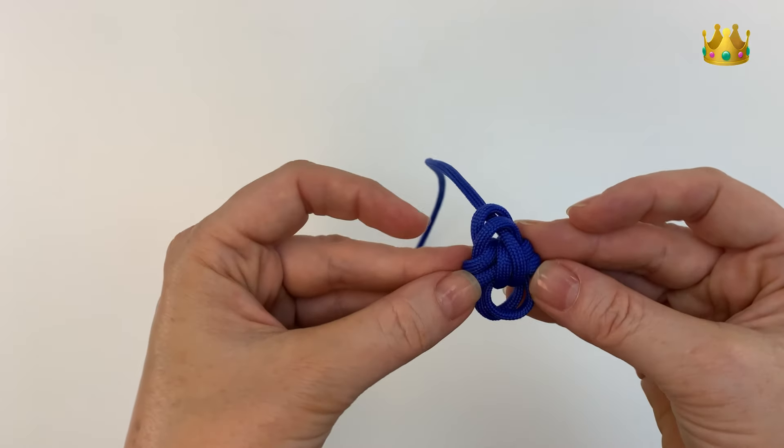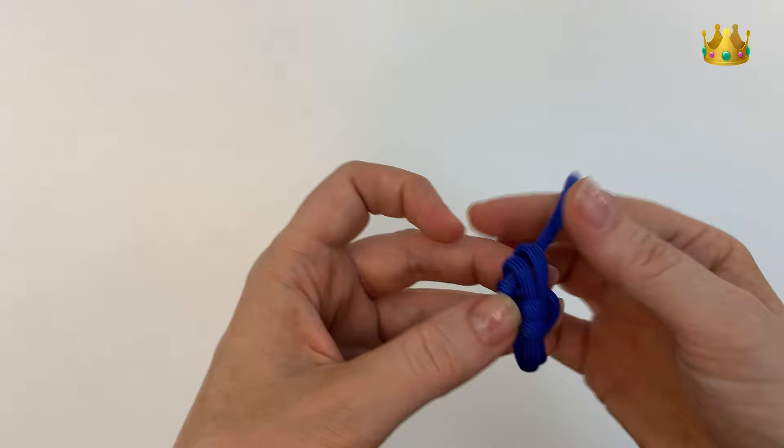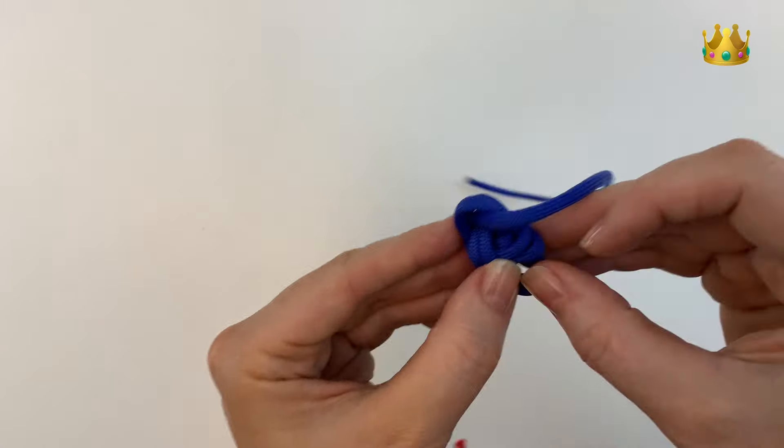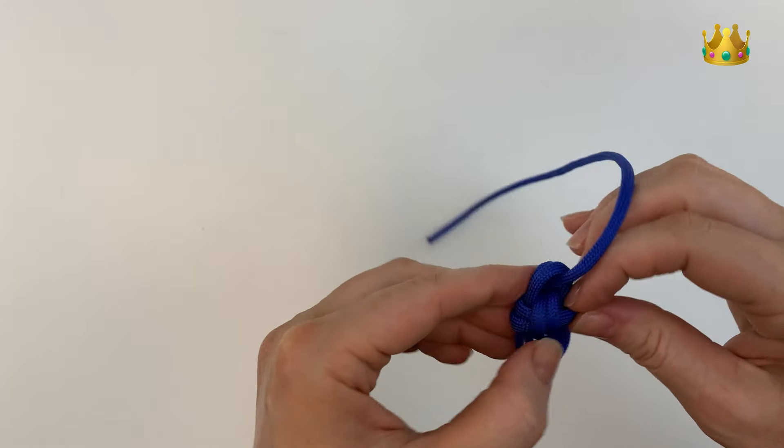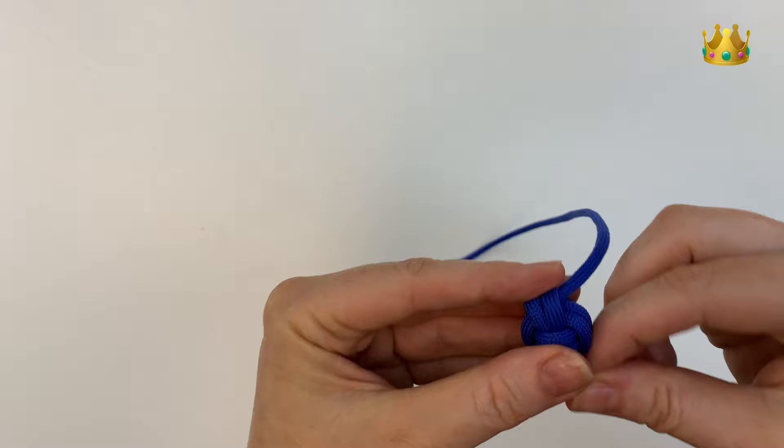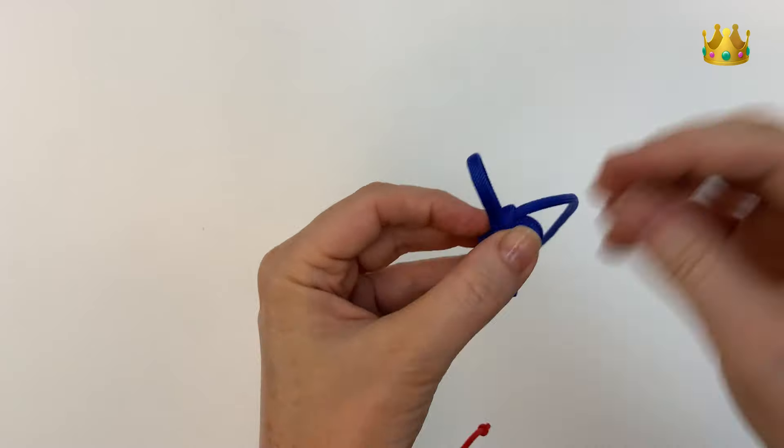So that is your full monkey fist knot there, all we need to do now is tighten it up. Just working that paracord around and through the knot on each layer, to pull it nice and tight.